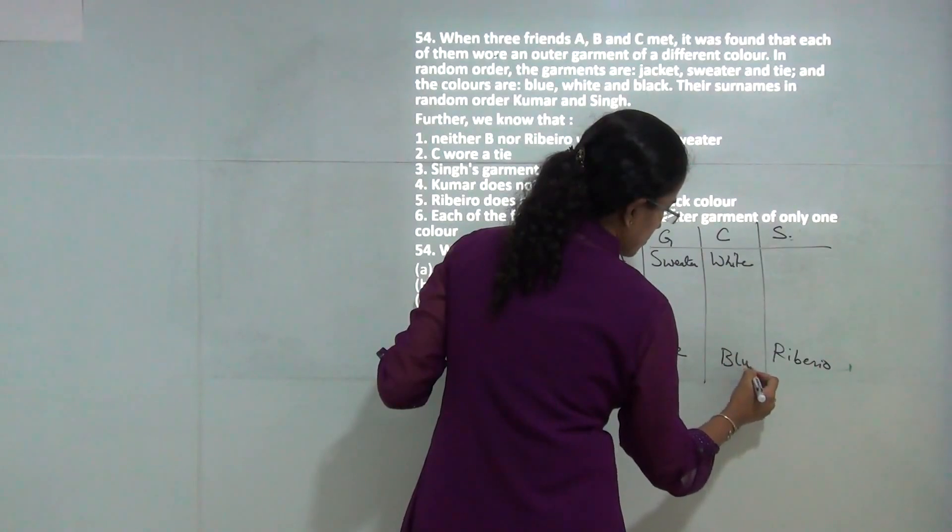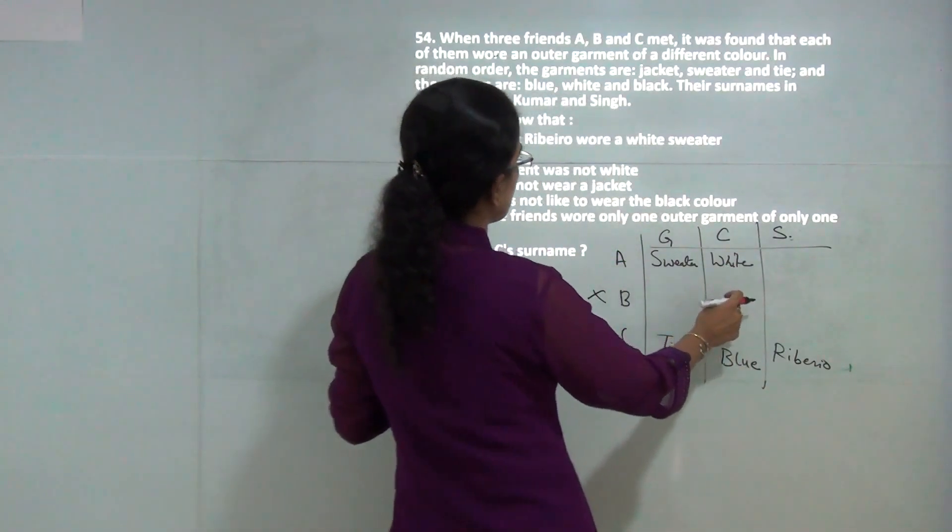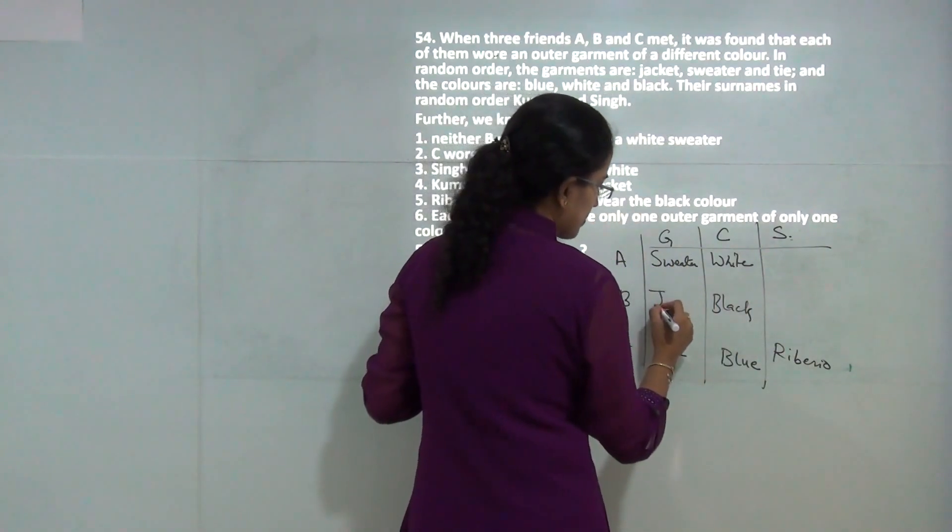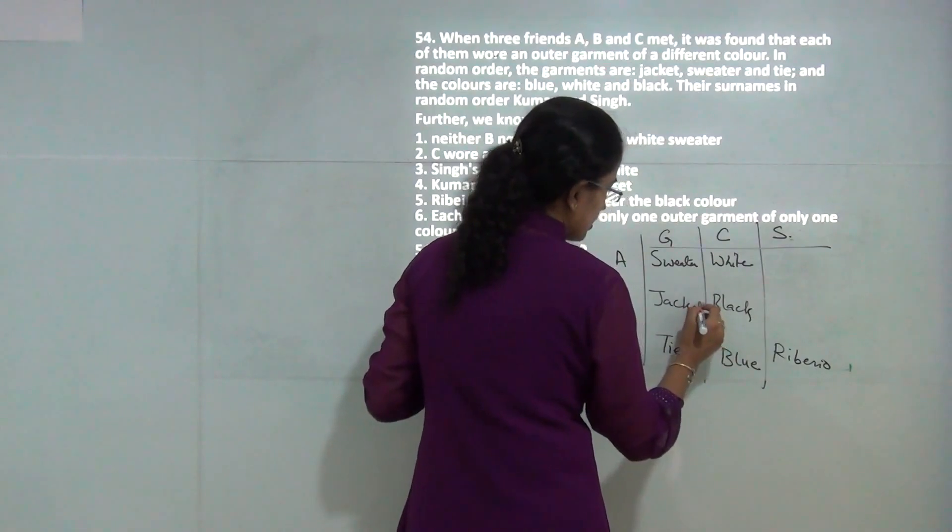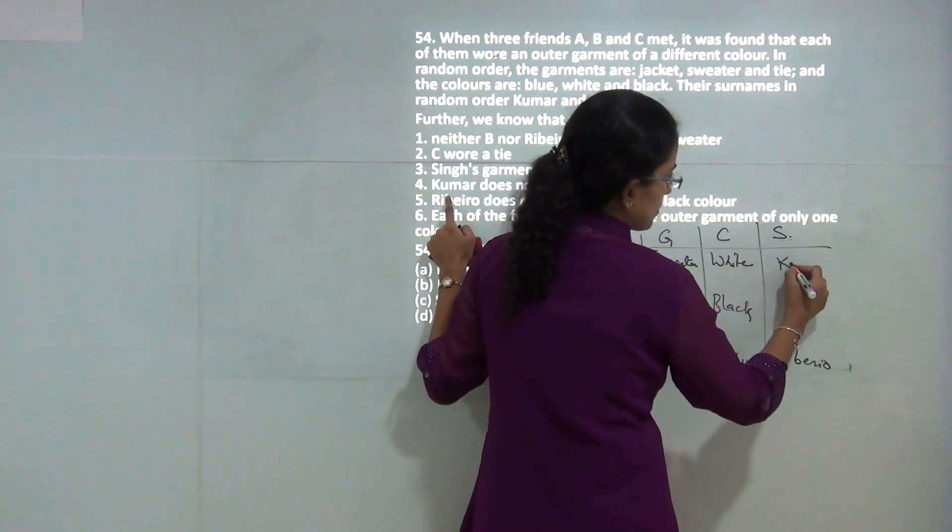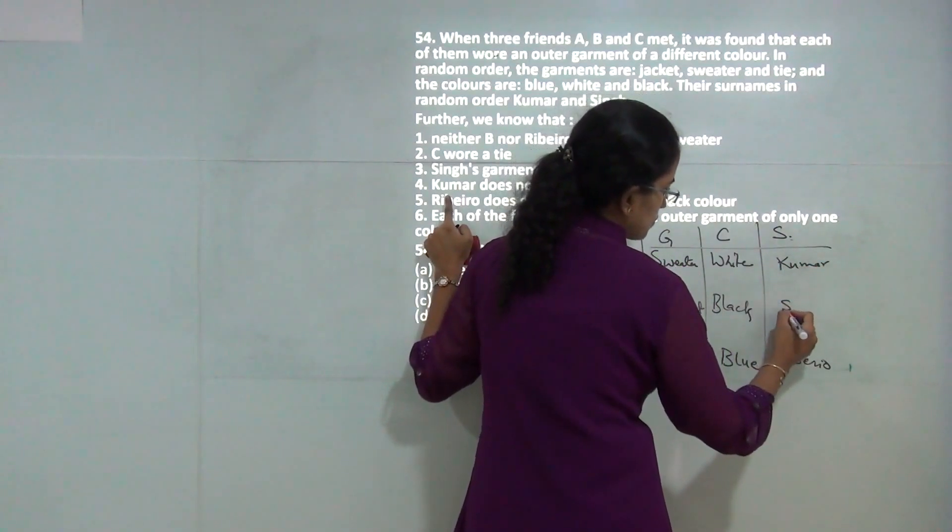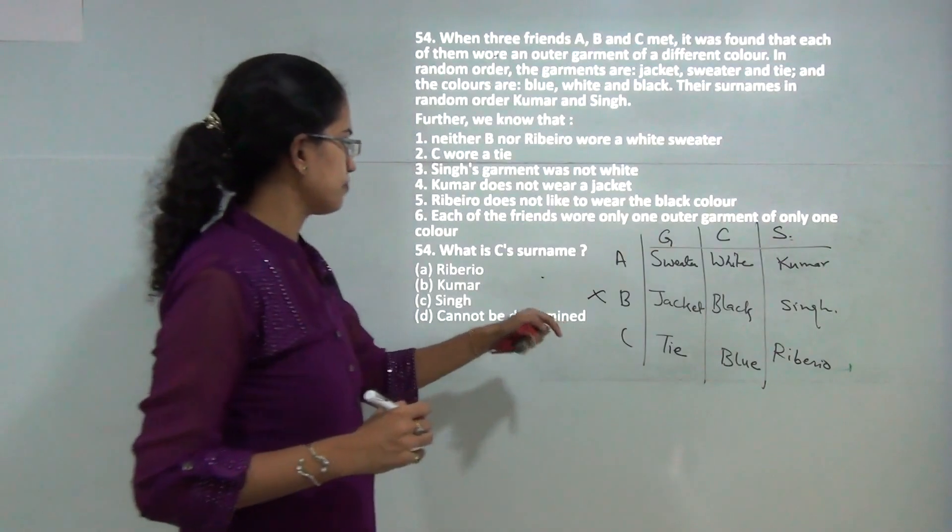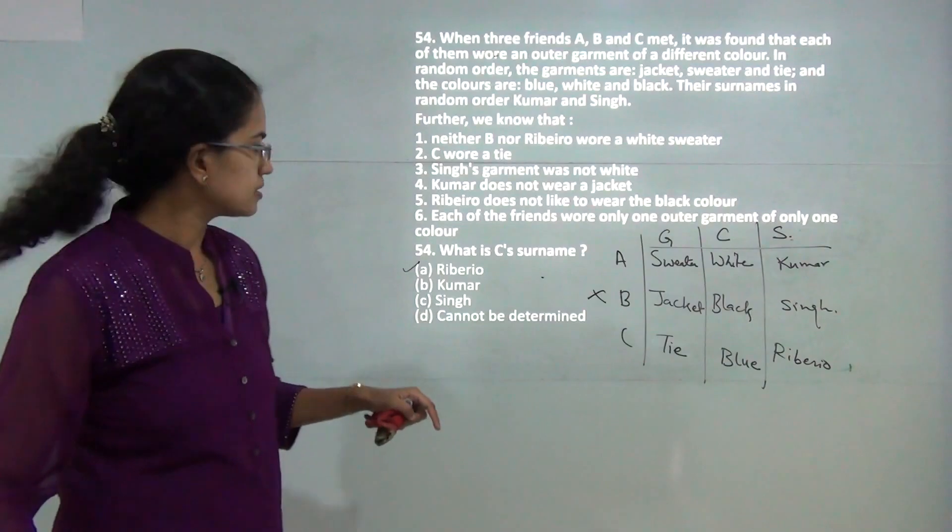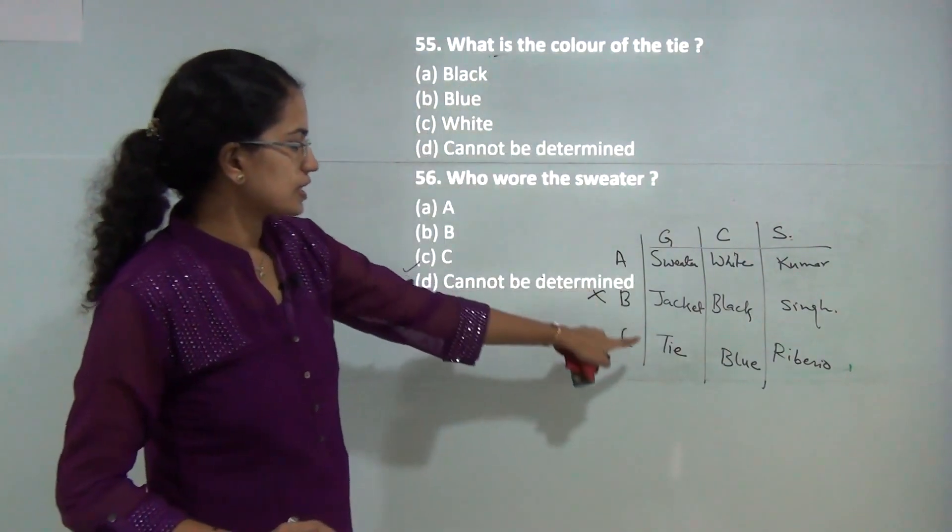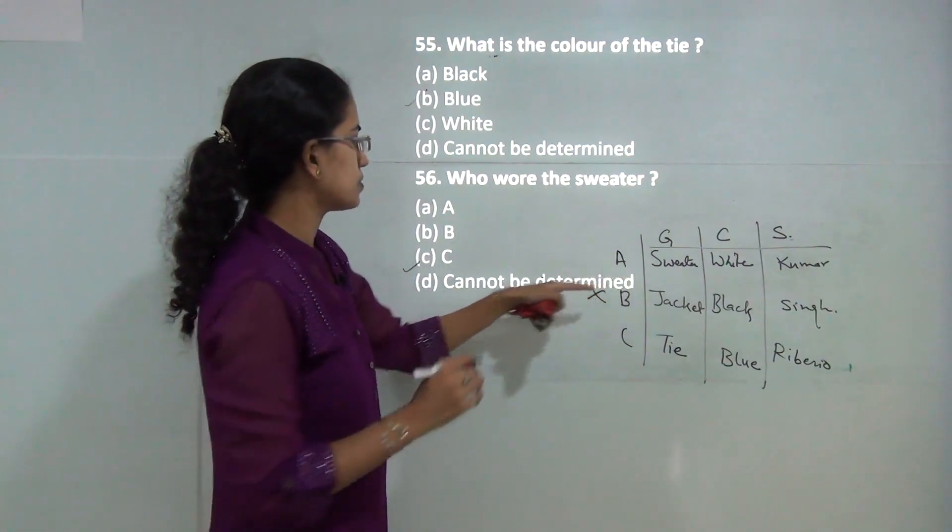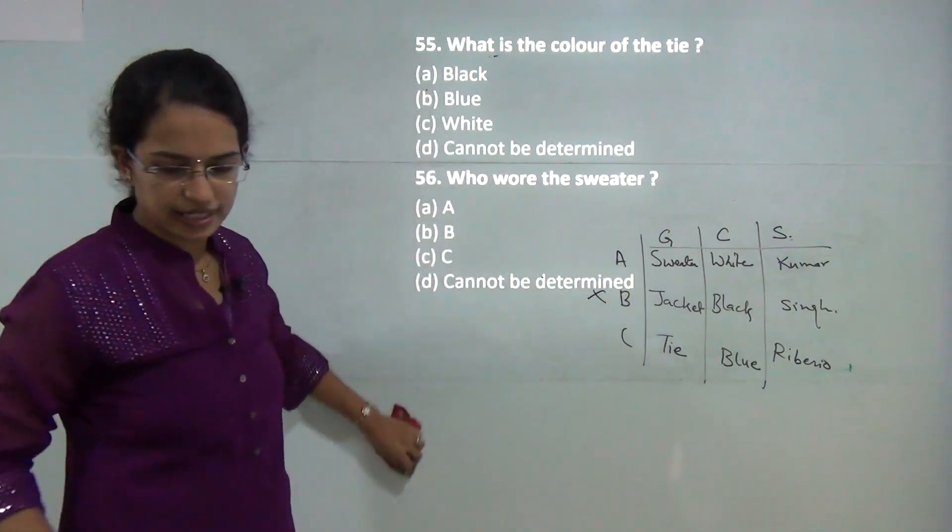Riberiu does not like black color, so Riberiu would have blue. With white and blue taken, the only color remaining is black. Kumar does not wear a jacket, so this would be Kumar and this would be C. Now we can answer: C's surname is Riberiu, the tie is blue color, and A wears the sweater. These are the correct answers.